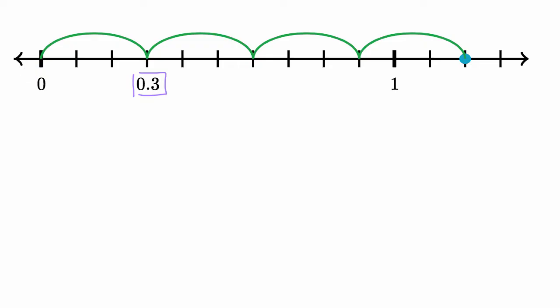Well, let's see. We are going one times 3 tenths, two times 3 tenths, three times 3 tenths, and then four times 3 tenths. So what's represented here is four times 3 tenths.